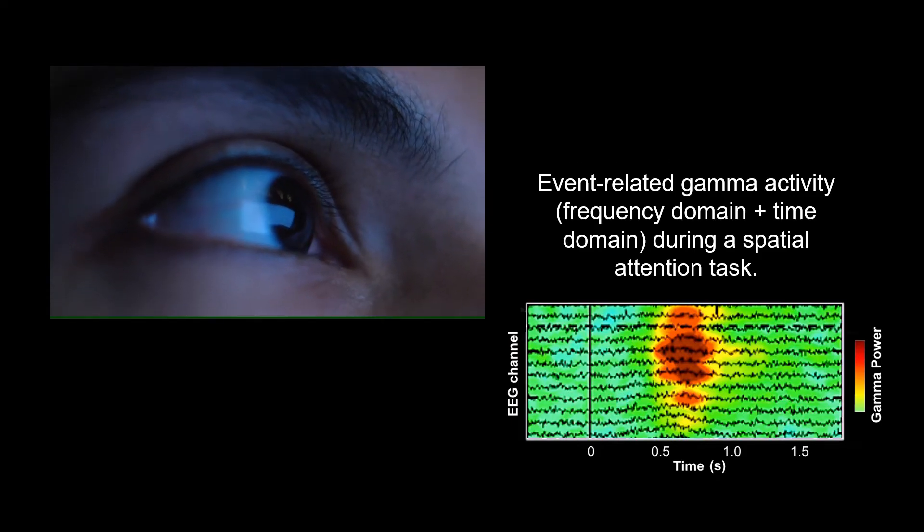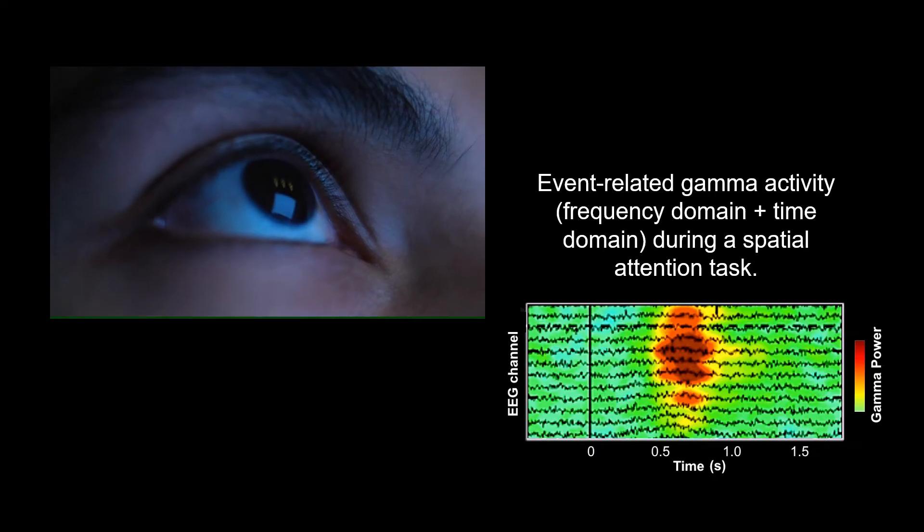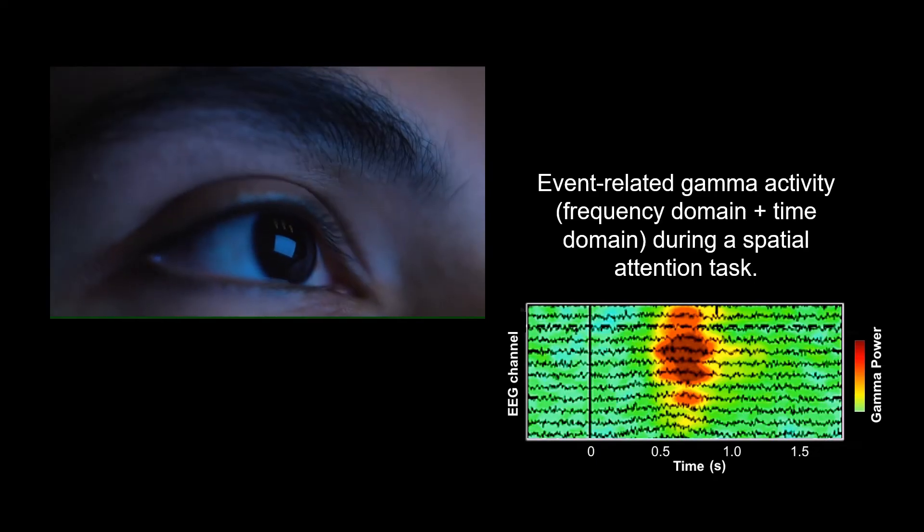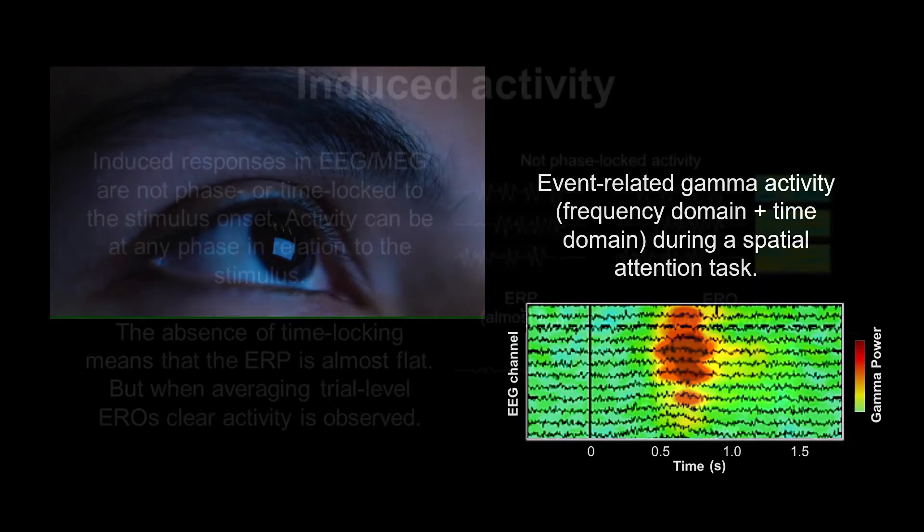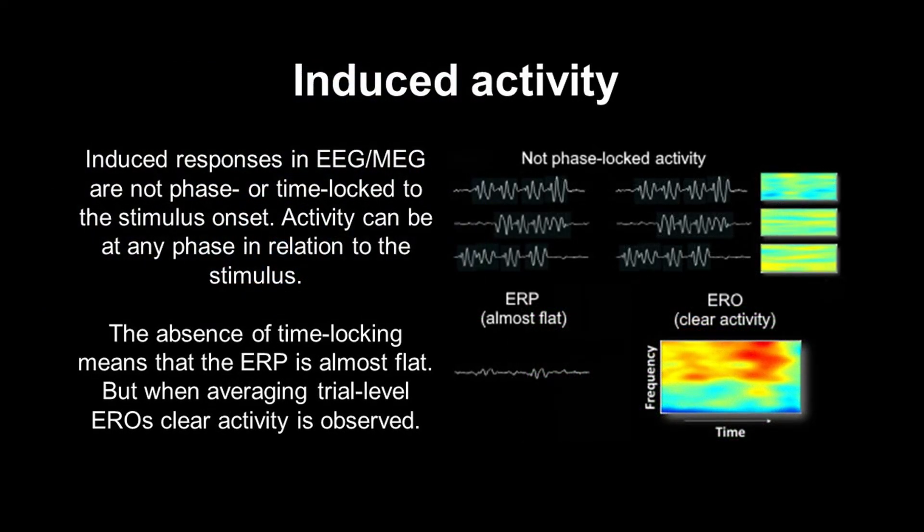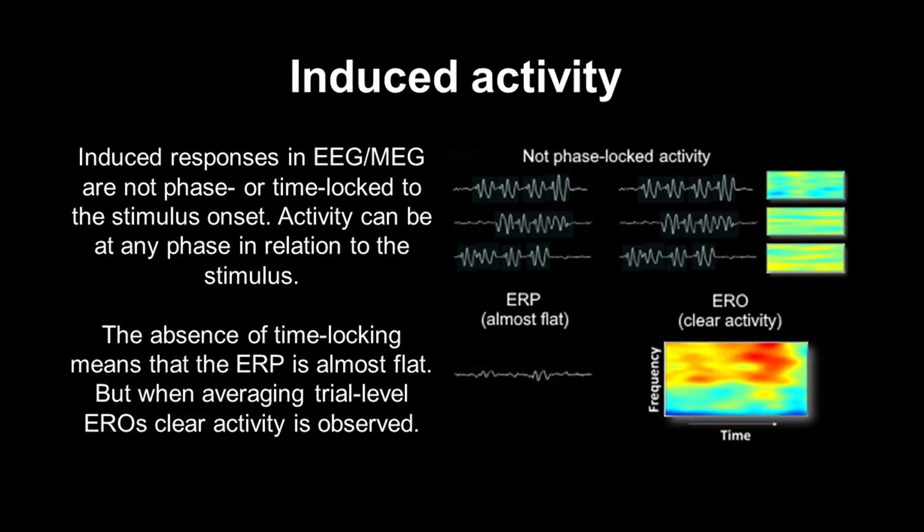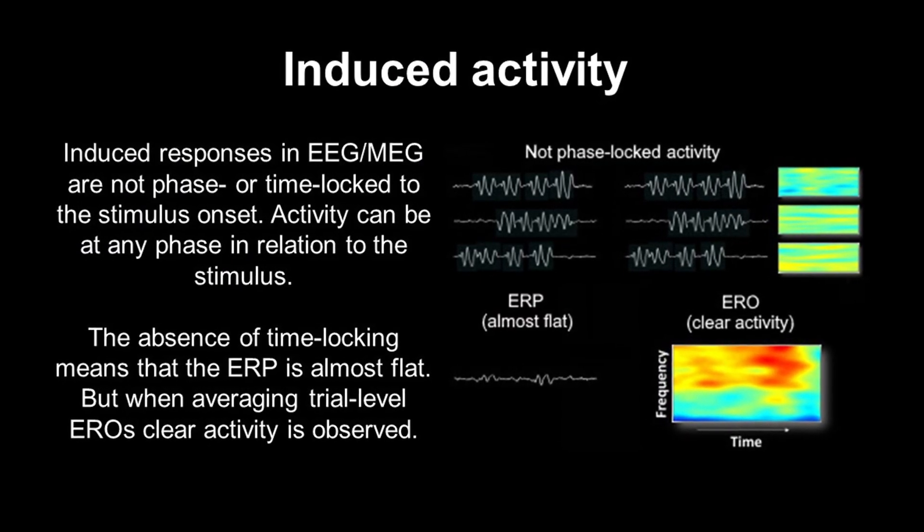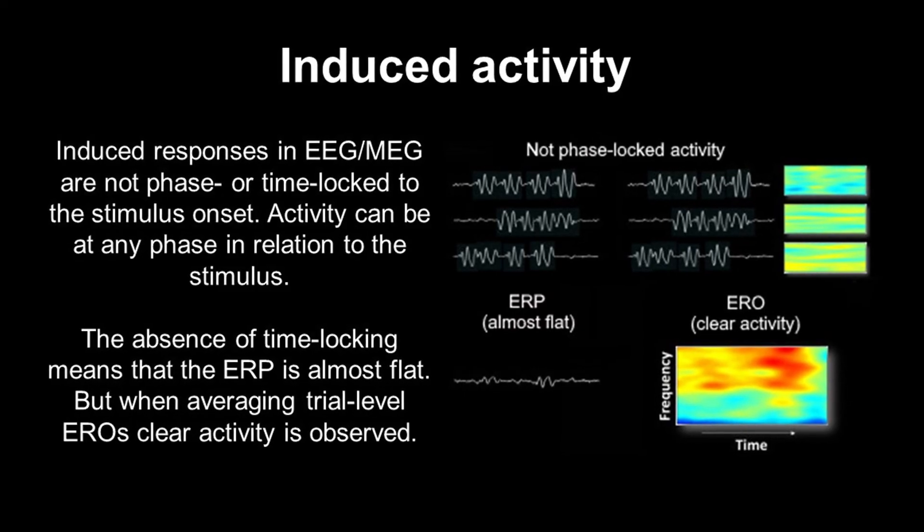This event-related gamma activity is not clearly seen in ERPs, but is obvious in a time-frequency analysis. This is because the increase in gamma activity is what we call an induced response. This means that already ongoing gamma oscillations are amplified. So in contrast to evoked responses, there is no reset of the signal.